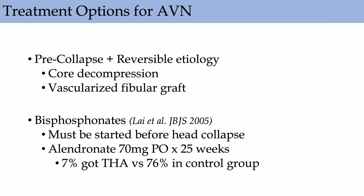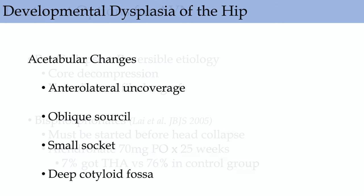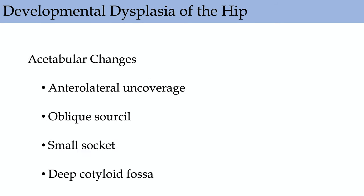Treatment options for AVN: if there's pre-collapse and a reversible etiology, you can do core decompression or vascularized fibular bone graft. Bisphosphonates can also be used but should be started before head collapse. In one study, 7% of patients on alendronate needed THA versus 76% in the control group. Bisphosphonates are variable and helpful. Most importantly, if there is collapse, total hip arthroplasty is the treatment of choice.